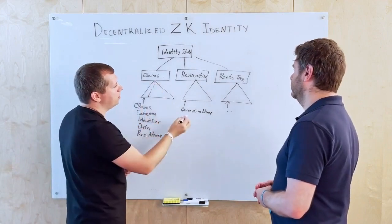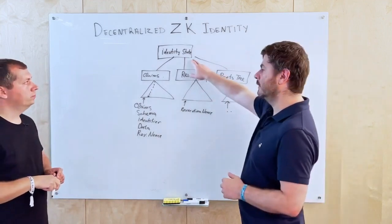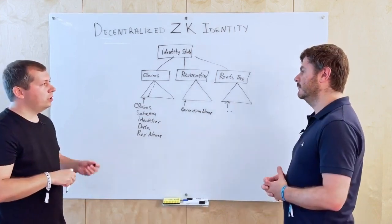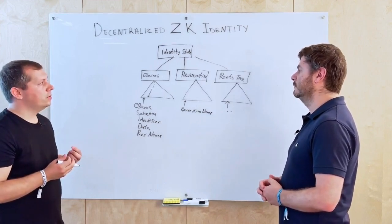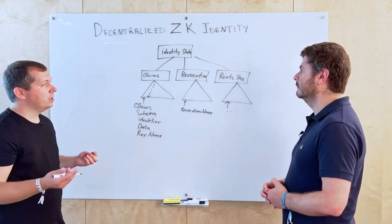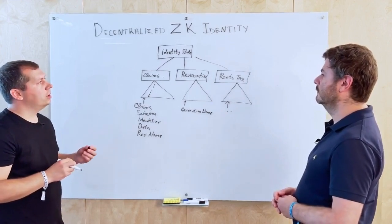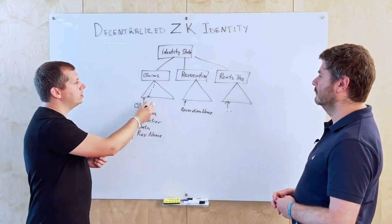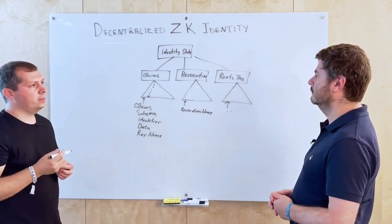The claims tree root is added to the roots tree over time. This gets recorded on the blockchain via a smart contract that verifies state transitions using a special ZK circuit. The circuit checks that it's actually the identity who is calling and updating the state on-chain. In the future it could enforce more complex rules — for example, checking that claims were not removed or revocations were not deleted.